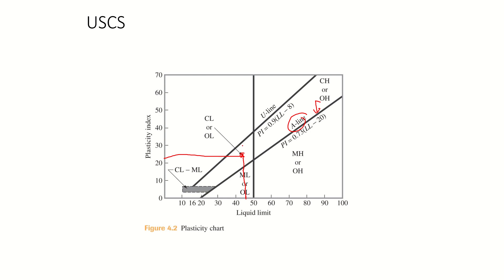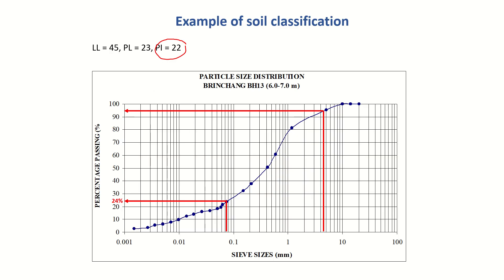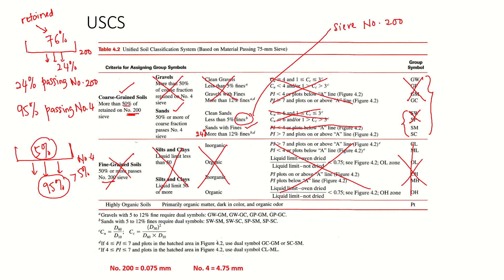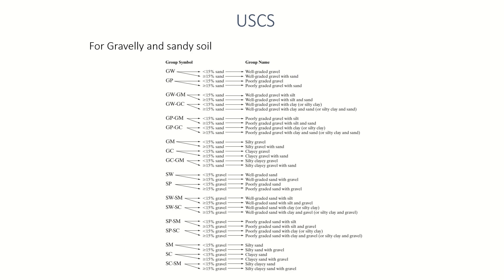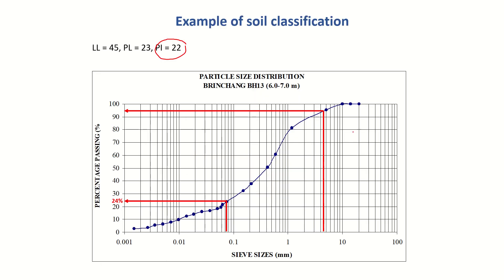Since the point is above the A-line, the criteria is fulfilled, and the group symbol for this soil sample is SC — clayey sand. That's how you classify a soil sample using the USCS system. Thank you very much. Bye-bye.